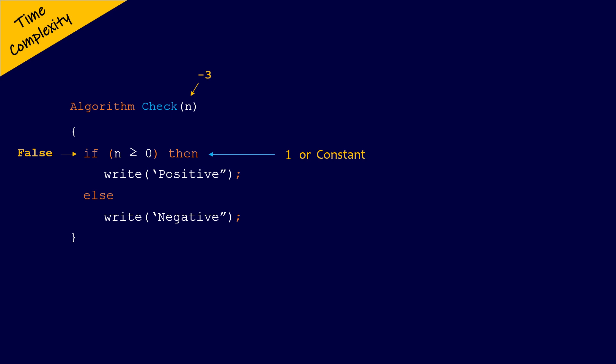So if you observe, whatever is the value of n passed to this algorithm, the condition in the if-else statement is either true or false, and does not depend on the size of the input, that is n. Therefore, the frequency or the number of times the if-else statement executes is 1. Again, an important point to remember is that here we are looking at the time complexity of the if-else statement, which is constant. The time complexity of the statements inside the if structure or the statements inside the else structure depends on what operations are performed by those statements.